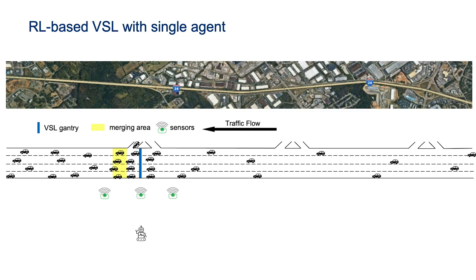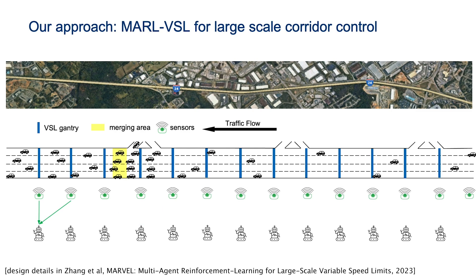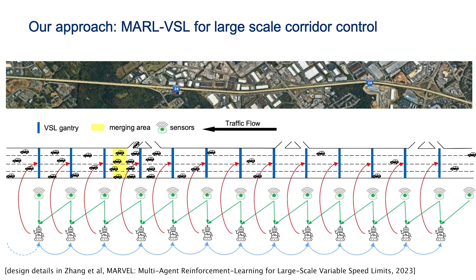Imagine a highway with one VSL controlled by a single agent. By observing the data from roadside sensors, the agent can select a speed limit for the corresponding location. When it comes to multiple VSL gantries, we introduce multi-agent RL, where each gantry's agent not only processes sensor data, but also communicates with neighboring agents. This collective decision-making process ensures a coordinated effort to enhance traffic conditions.